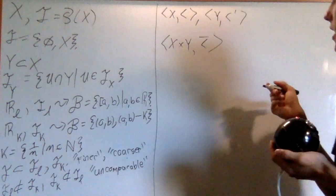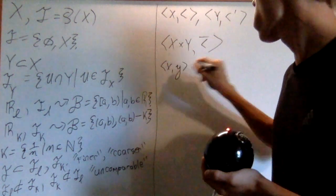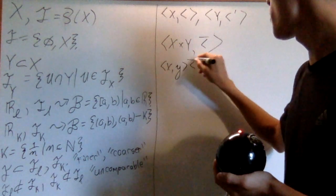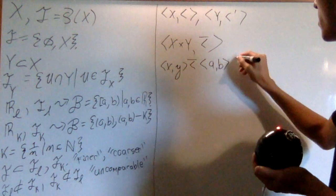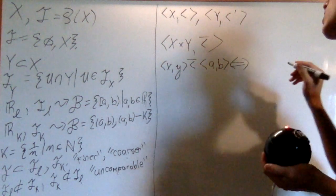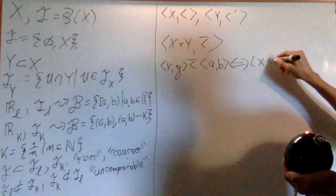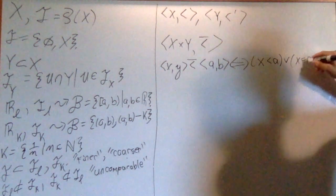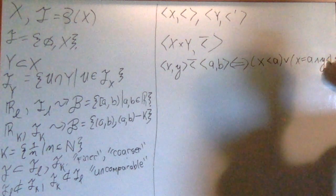So the way we define it is we say that the pair (x, y) is less than bar the pair (a, b), if and only if x is less than a, or that x is going to be equal to a, and y is less than prime b.